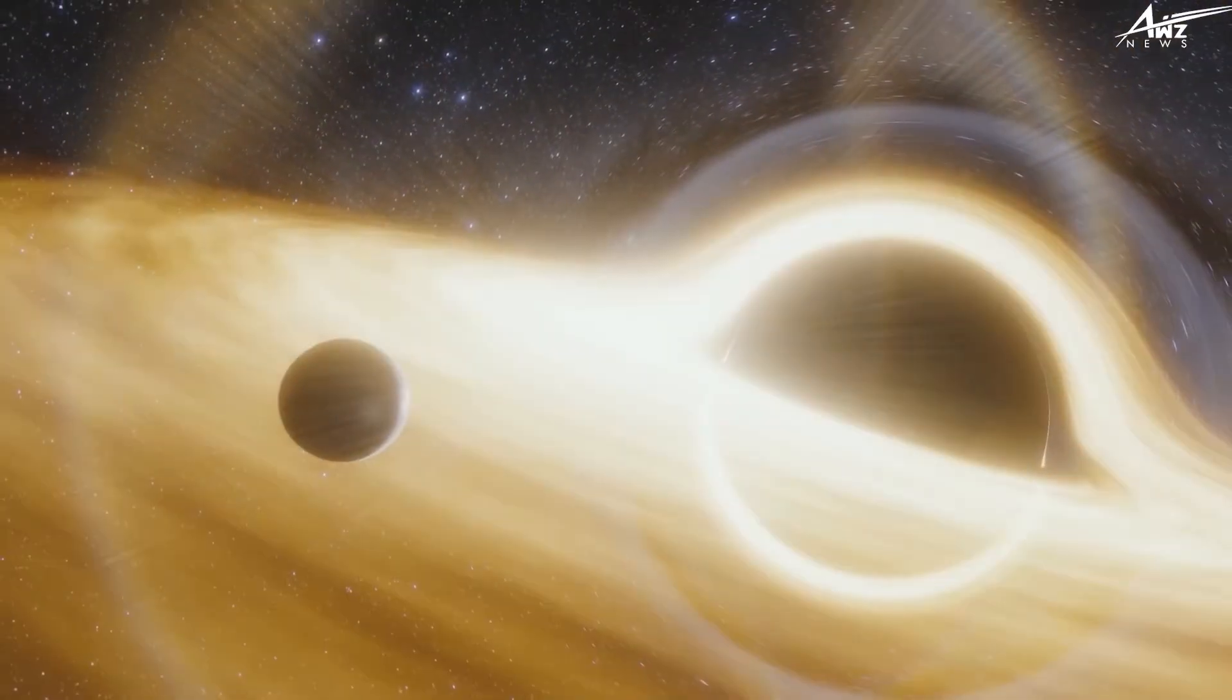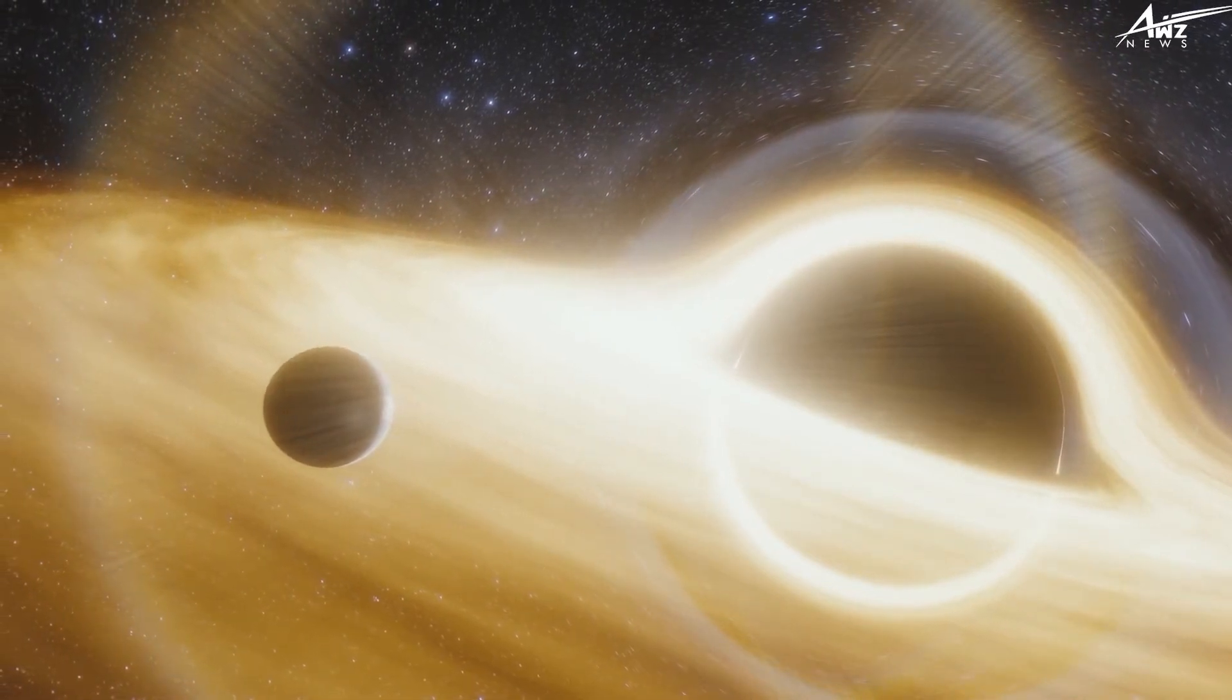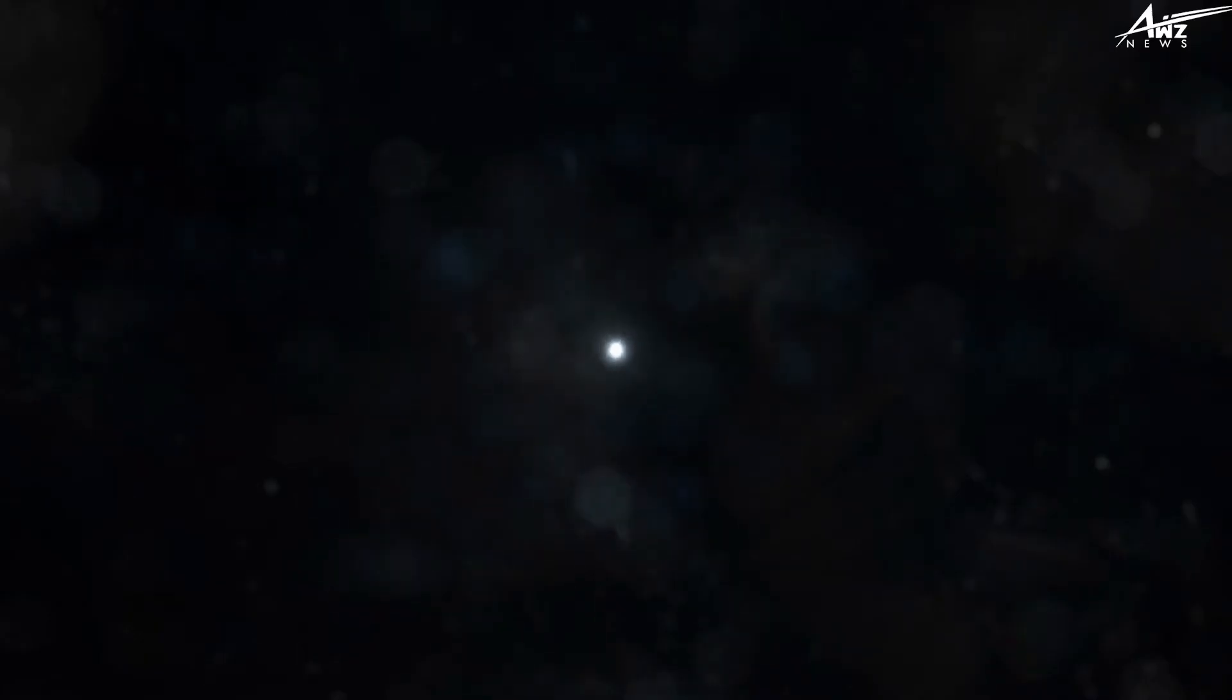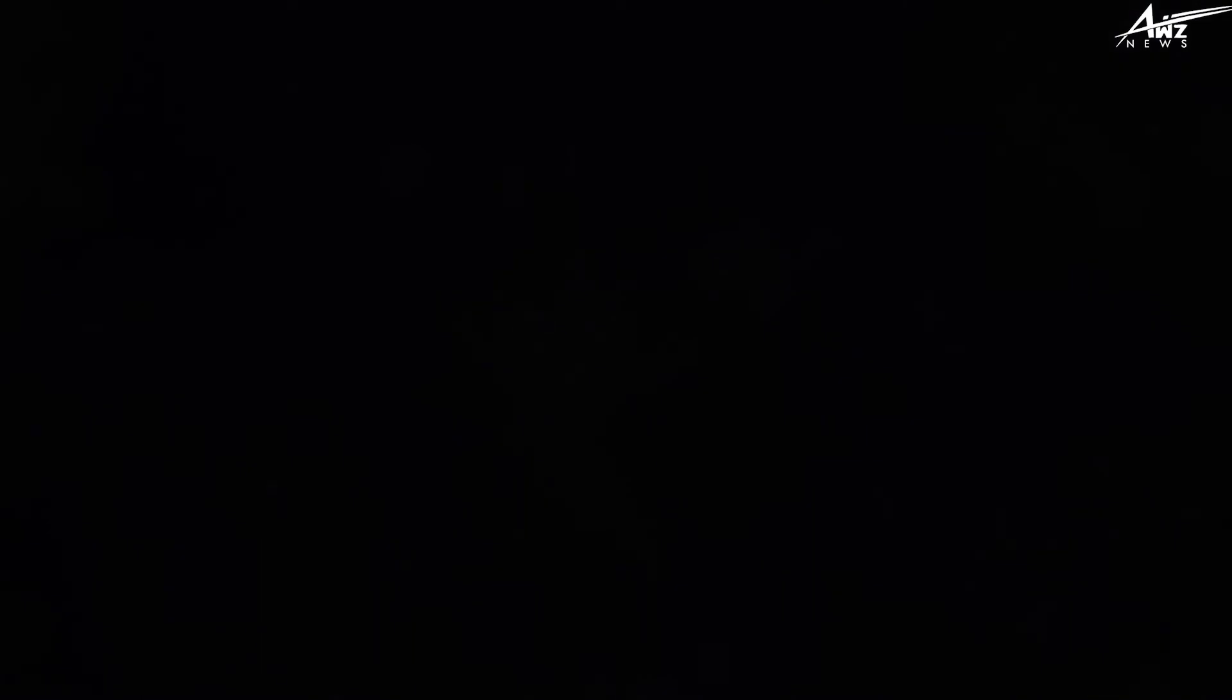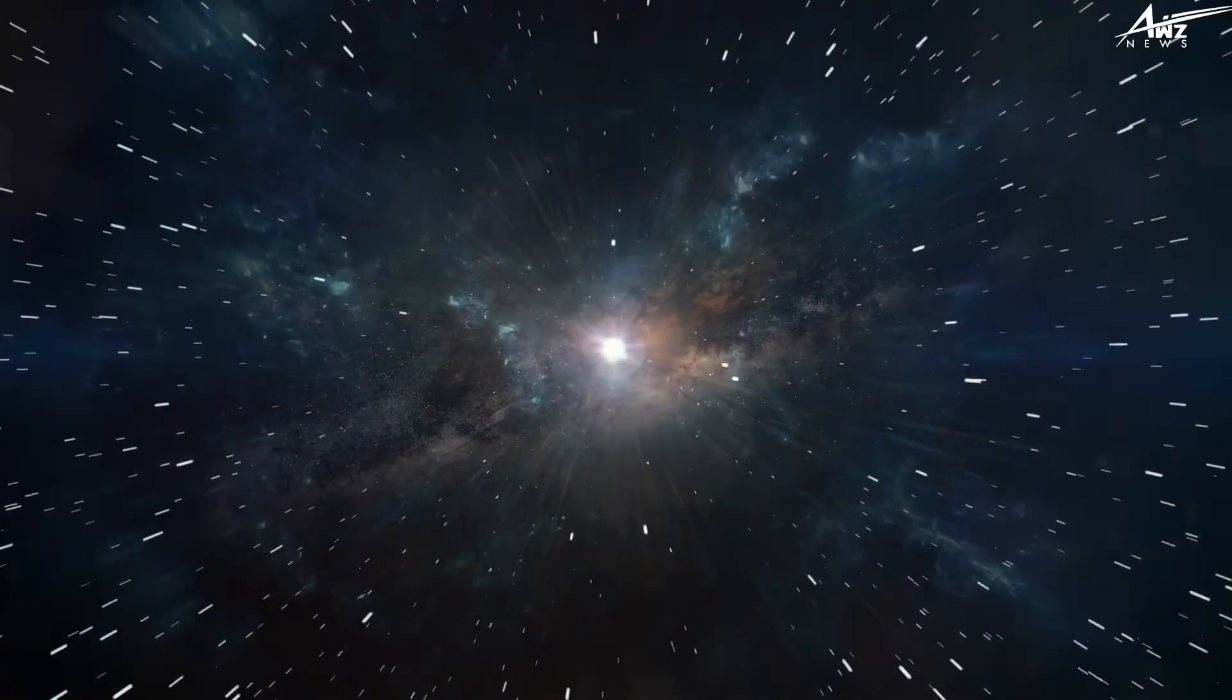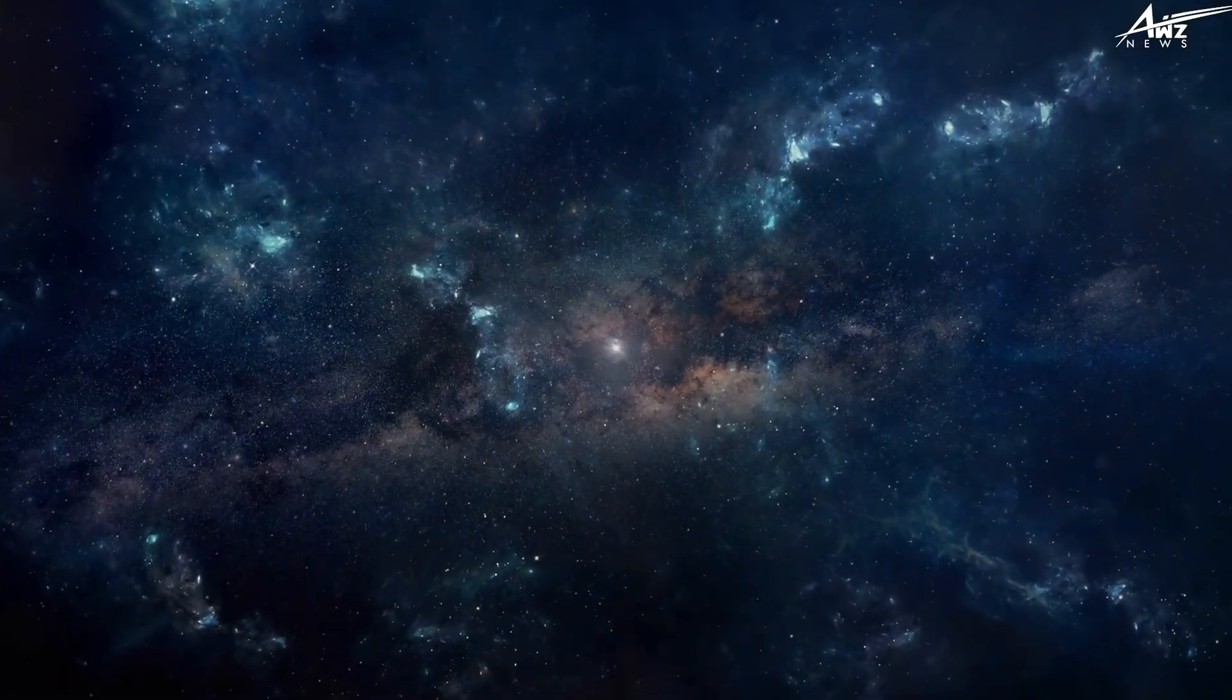Stellar black holes. A star may collapse or fall into itself when it has used up all of its fuel. The new core of smaller stars, those with masses up to around three times that of the Sun, will eventually transform into a neutron star or white dwarf. But as a bigger star disintegrates, it keeps getting smaller and smaller until it forms a stellar black hole.